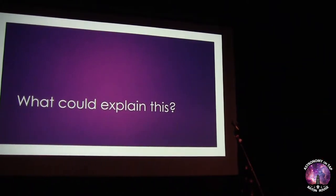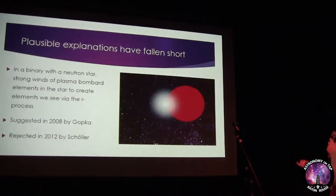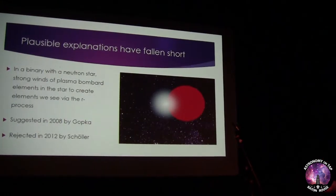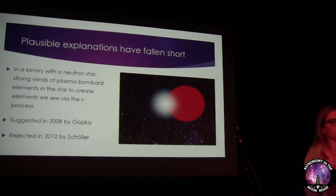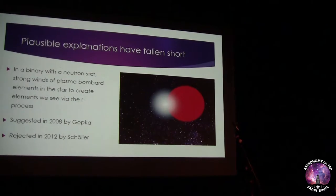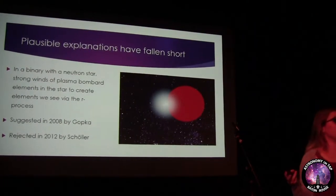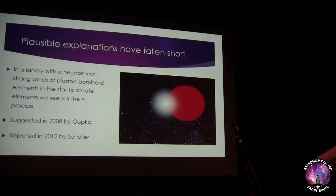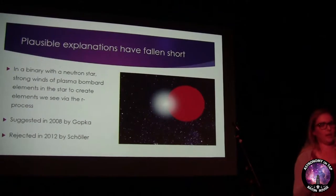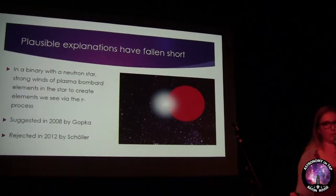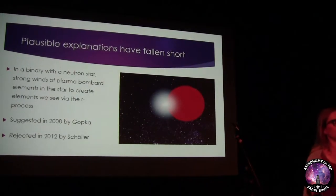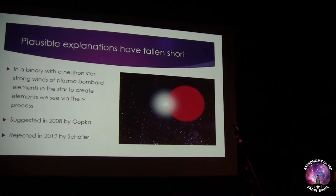I'm going to talk about the three ideas people have come up with to explain this. The first was the most plausible but didn't end up working. What was proposed is that Chbilsky's star would be very close to a neutron star — a really dense star with special properties. The neutron star would be creating a hot plasma and blowing it onto Chbilsky's star, producing free neutrons that would interact with elements there and create new elements through what's called the R-process, which creates short-lived elements.